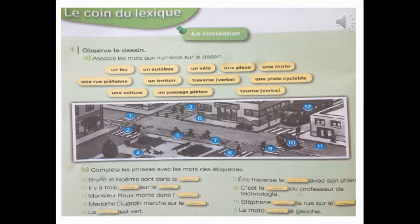Complète les phrases avec les mots des étiquettes. On va modifier le mot pour être convenable avec la phrase — on va faire des changements pour adapter ce mot selon la phrase. « Bruno et Noémie sont dans la rue piétonne. Il y a trois vélos sur la piste cyclable. Monsieur Roux monte dans l'autobus. Madame Dujardin marche sur le trottoir. Le feu est vert. »